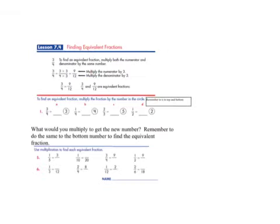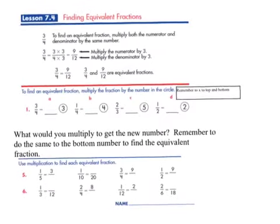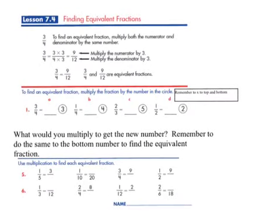Now, the next thing we are going to talk about is equivalent fractions. I'm just going to enlarge this a bit here. Equivalent fractions can be found by multiplying the top number and the bottom number by the same number, so the numerator and the denominator.